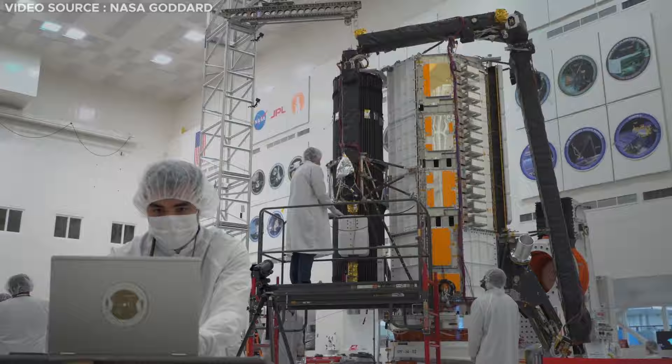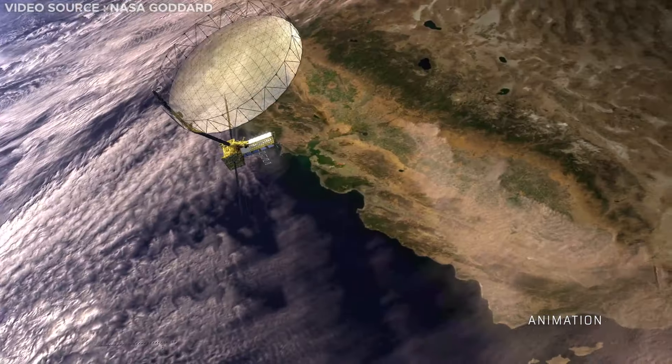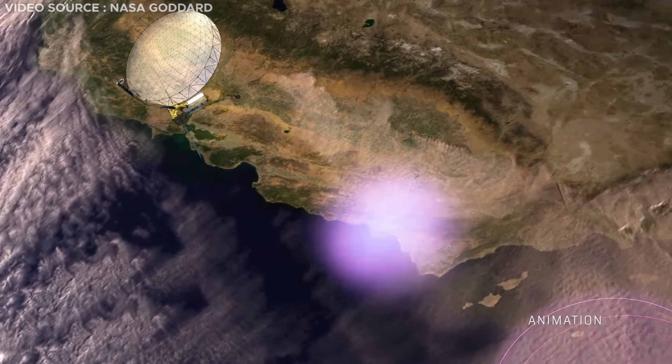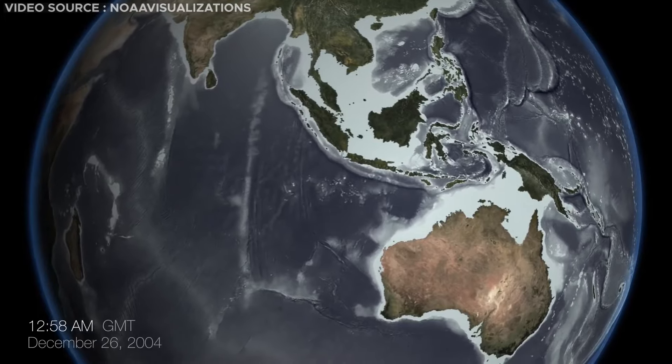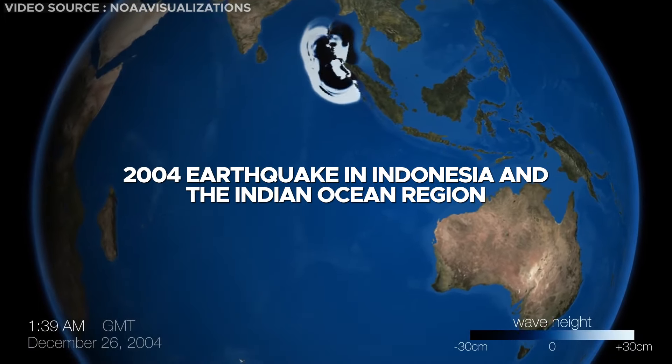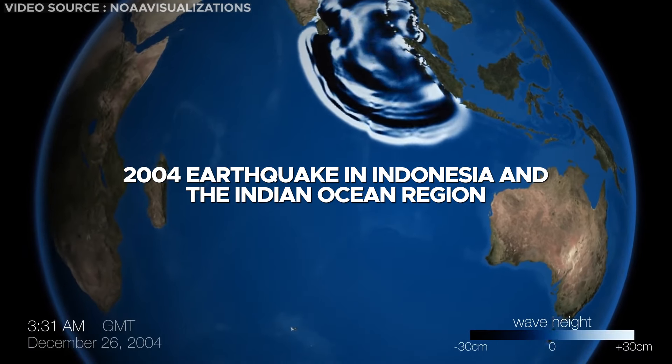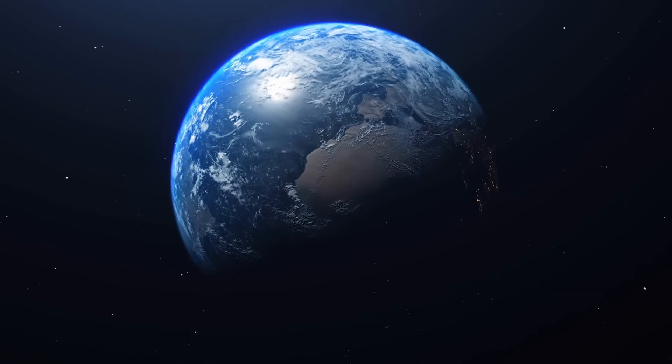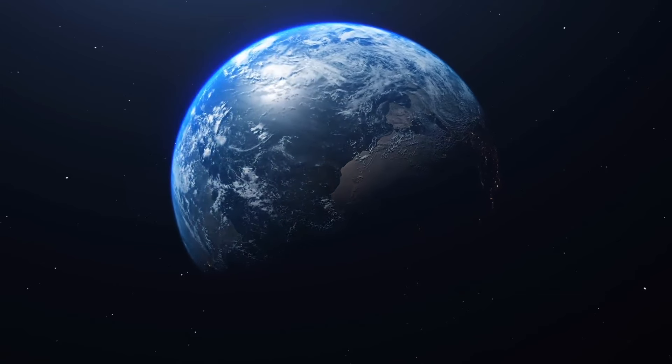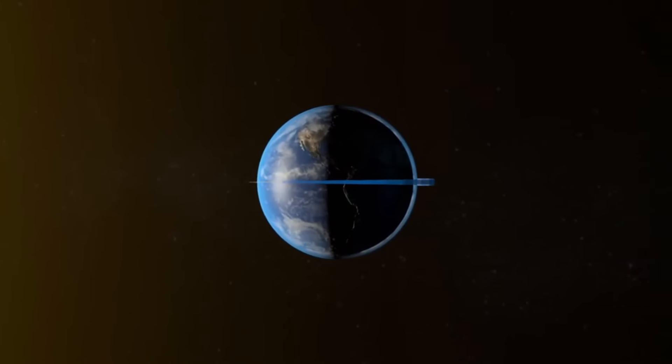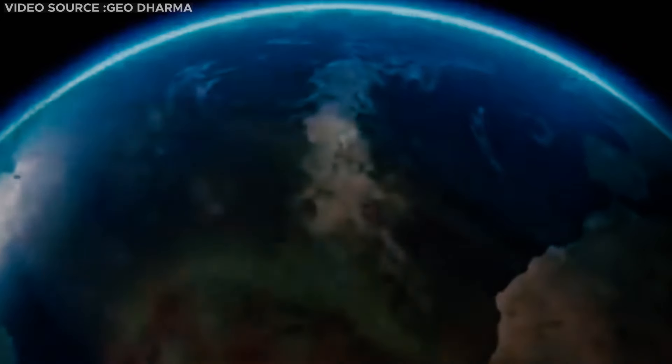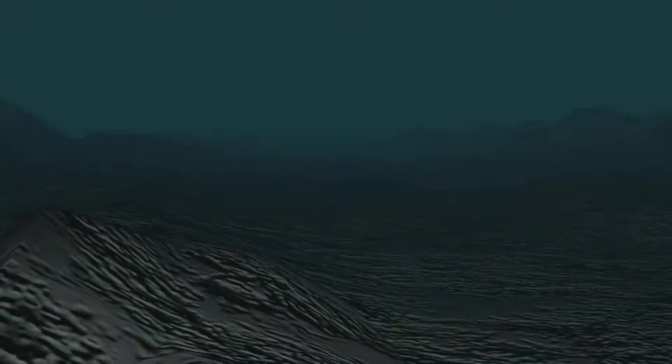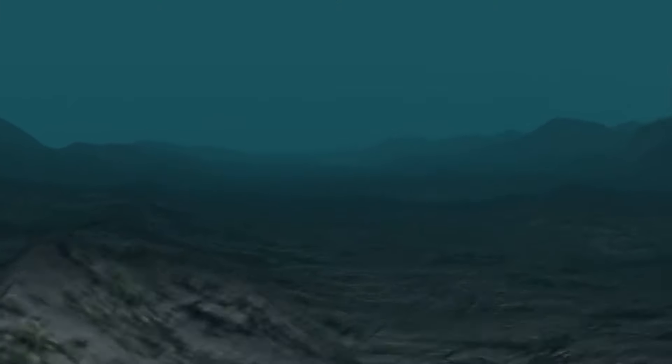Researchers from NASA's Jet Propulsion Laboratory have highlighted seismic activity as another factor influencing the Earth's rotational speed. A notable event occurred after the 2004 earthquake in Indonesia and the Indian Ocean region. Following this seismic event, the Earth's rotation accelerated by approximately 3 microseconds. This acceleration resulted from a minuscule shift in the distribution of the Earth's mass caused by the movement of continental plates.